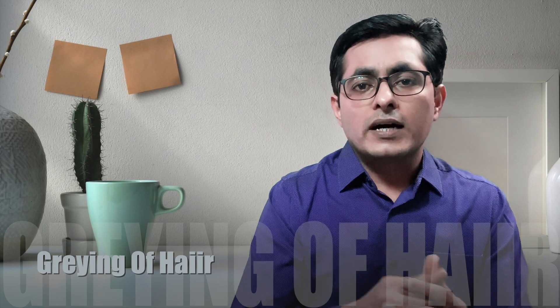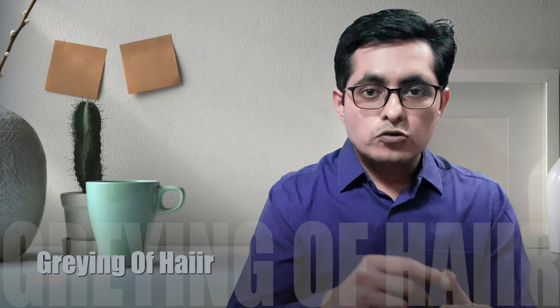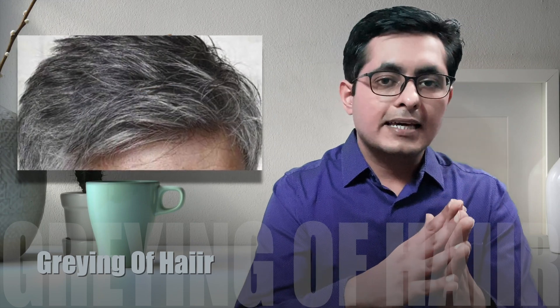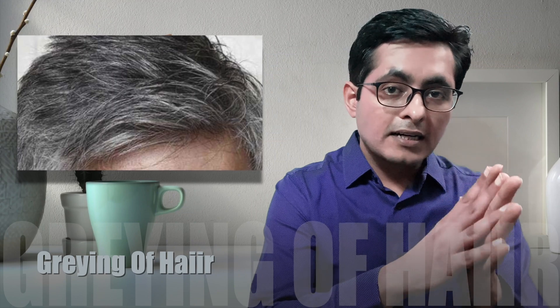Now if the hair strand is white, why do we call it greying of hair and not whitening of hair? These white hairs that start forming are mixed in between the black hair, which gives it a grayish appearance, hence it is called greying of hair.